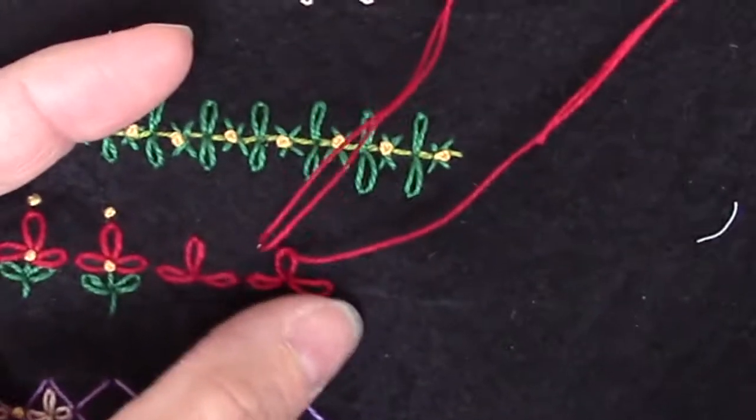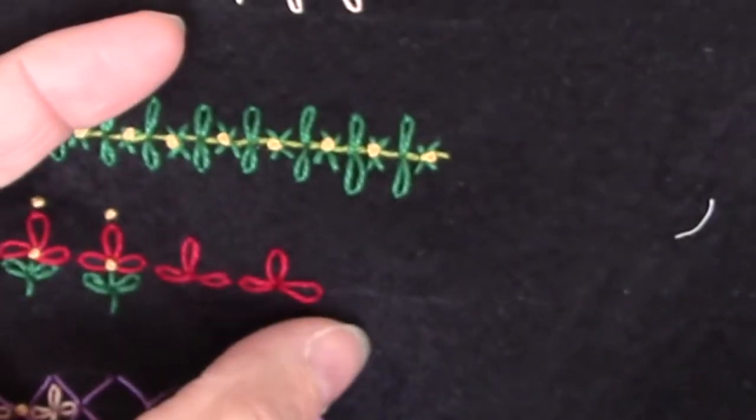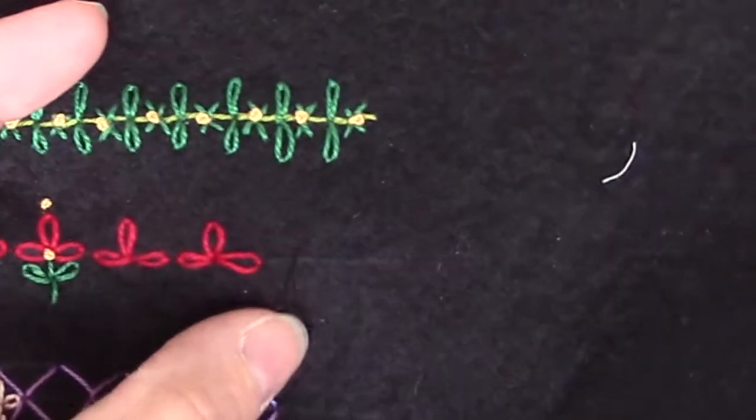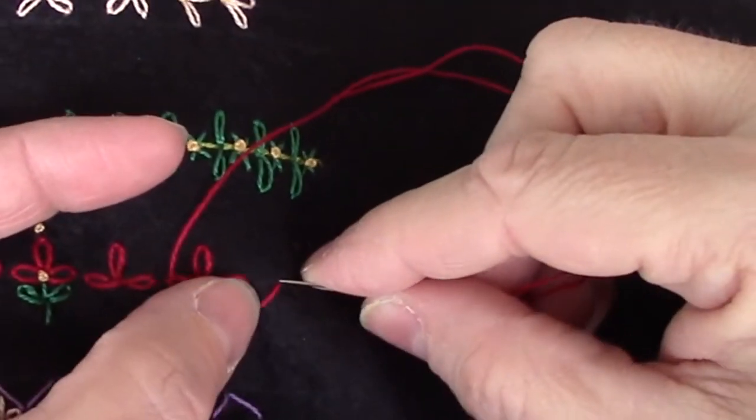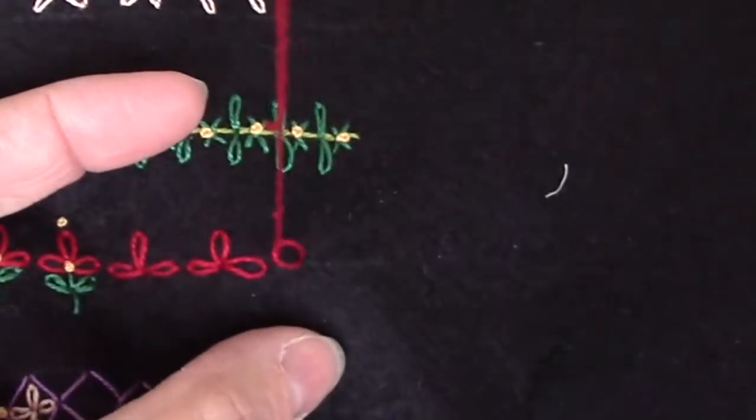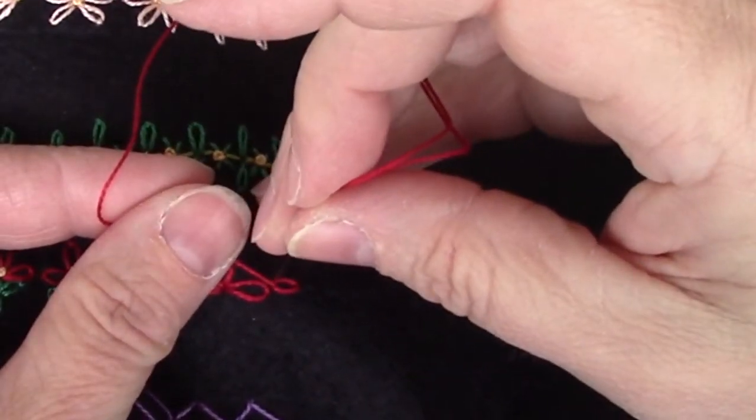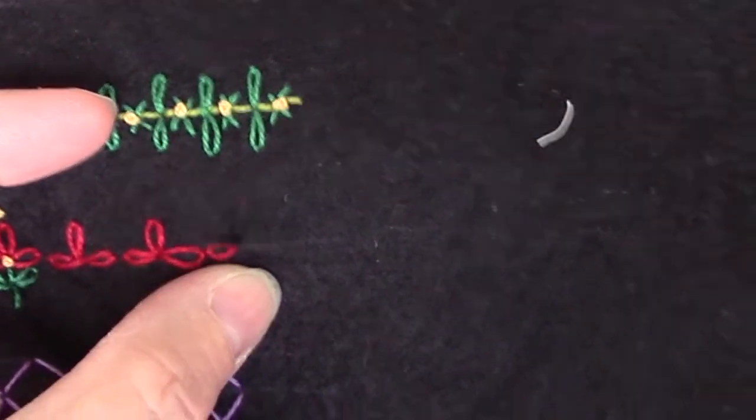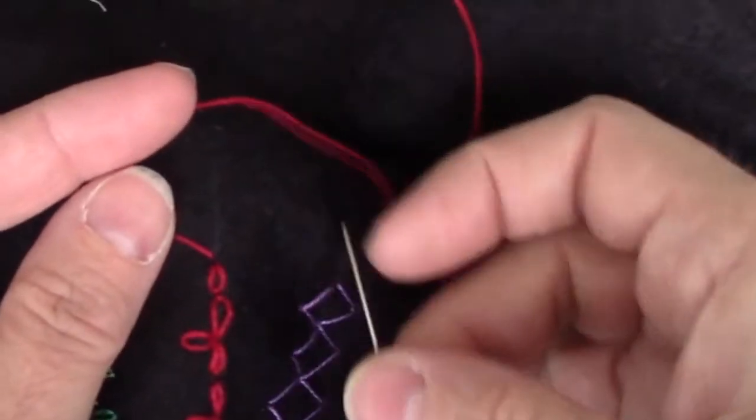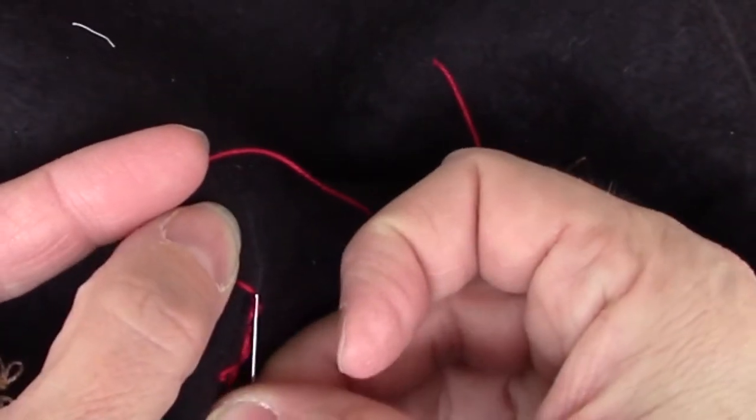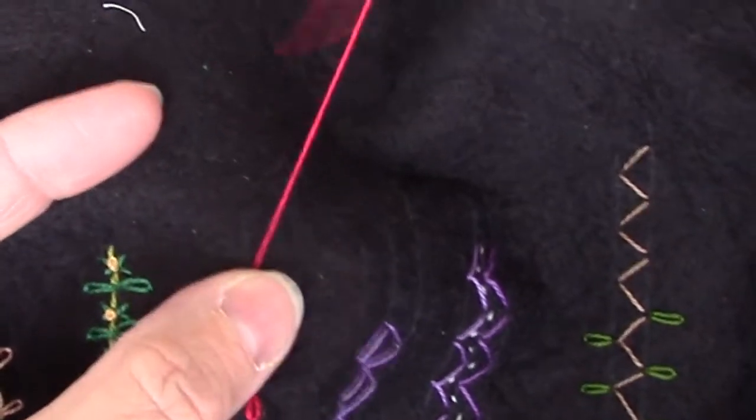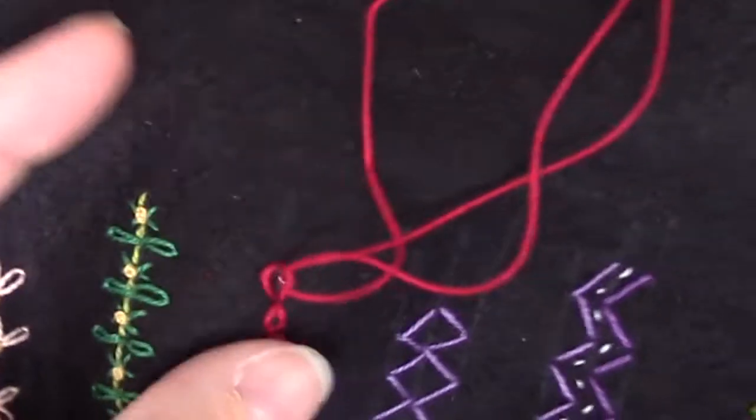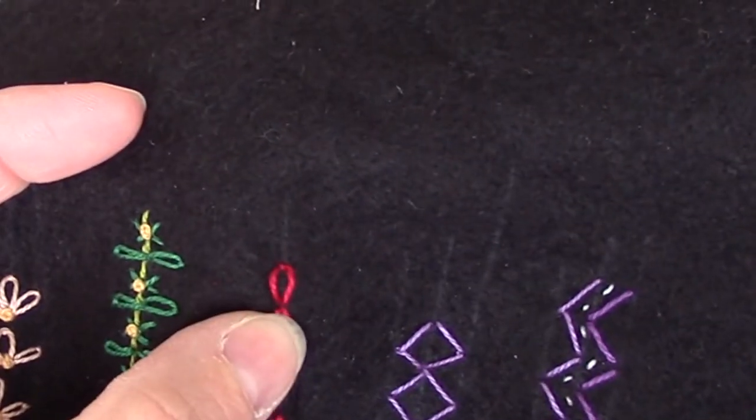My goal is to keep those petals pretty much the same length. But if you don't, it doesn't matter. Because if you start measuring petals in nature, they probably aren't all exactly the same length. And then I just go over and work another combination. And this one ended up being smaller and closer together than my others were. So you're just going to keep going down the line as far as you want to go, working groups of three lazy daisies. Two on the line and one going straight up vertical from that line.